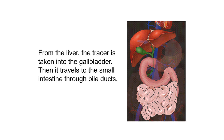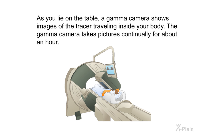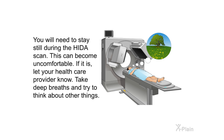From the liver, the tracer is taken into the gallbladder, then it travels to the small intestine through the bile ducts. As you lie on the table, a gamma camera shows images of the tracer traveling inside your body. The gamma camera takes pictures continually for about an hour.